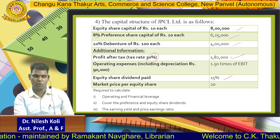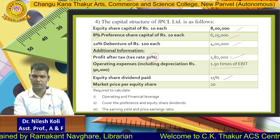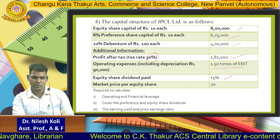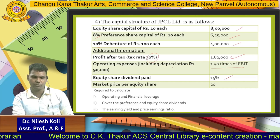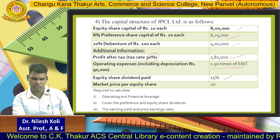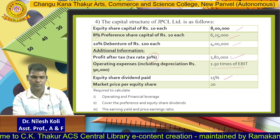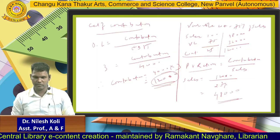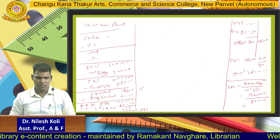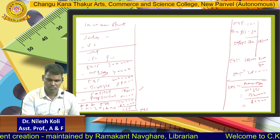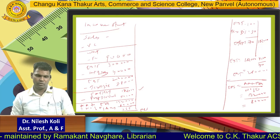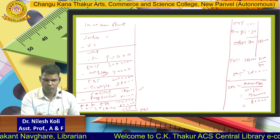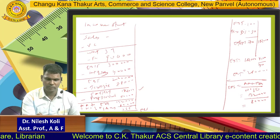For operating expenses: depreciation is given as 90,000 and since detailed breakdown is not provided, we assume depreciation is the only fixed cost, so fixed cost = 90,000. Adding back fixed cost to EBIT to get contribution: EBIT = 3,00,000 plus fixed cost 90,000 = contribution of 3,90,000.